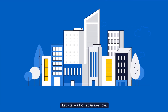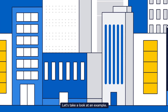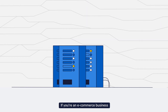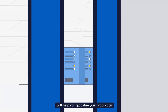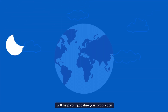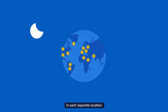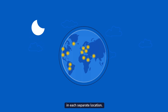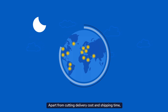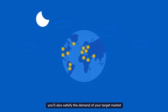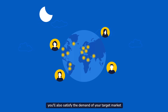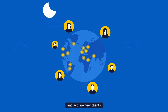How? Let's take a look at an example. If you're an e-commerce business, connecting to CloudPrinter.com will help you globalize your production without opening new offices or searching for print houses in each separate location. Apart from cutting delivery cost and shipping time, you'll also satisfy the demand of your target market and acquire new clients.